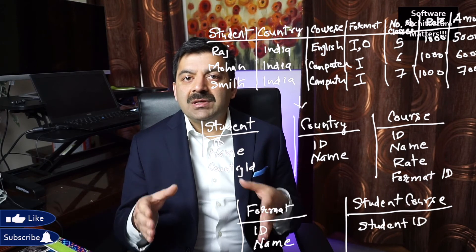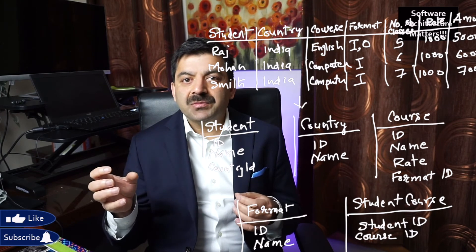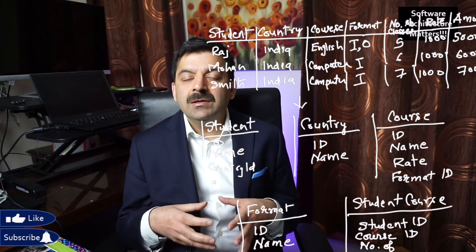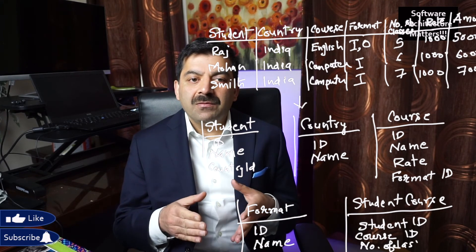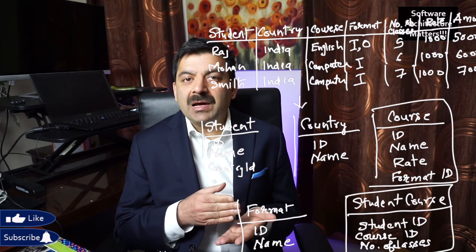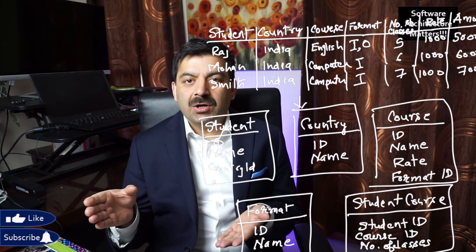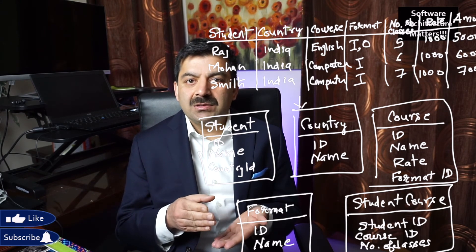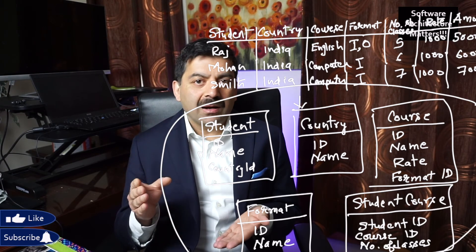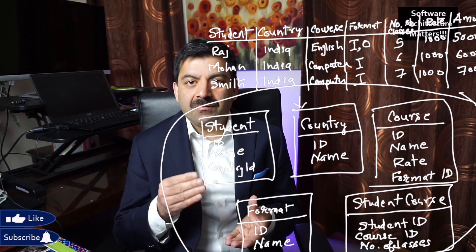The course format column can be moved to its own table to eliminate transitive dependency. Additionally, any column that can be calculated should be removed. For example, the amount to be charged is simply the number of classes multiplied by the rate per class. Since it can be derived from other columns, we can remove it from the database to maintain proper normalization.